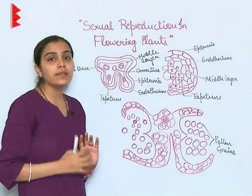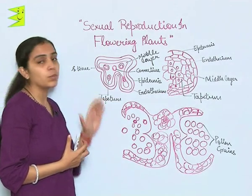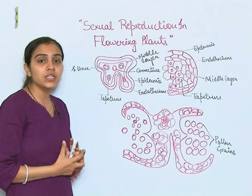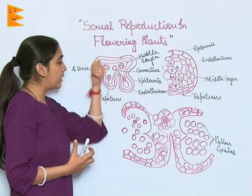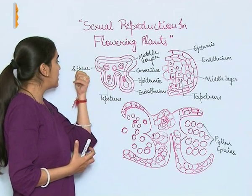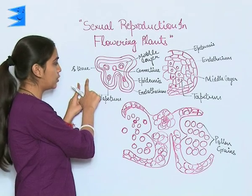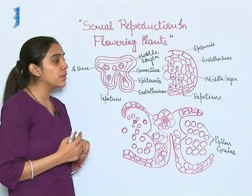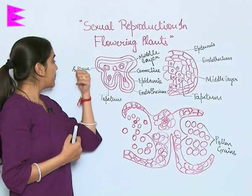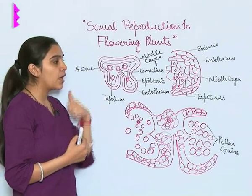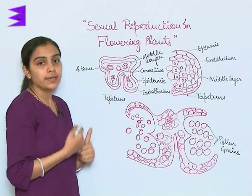When an anther is young, it shows sporogenous tissues, which are nothing but a homogeneous cluster of cells arranged inside or in the center of the anther. These sporogenous tissues are responsible for the formation of microspore tetrads. They undergo meiotic division and form microspore tetrads.